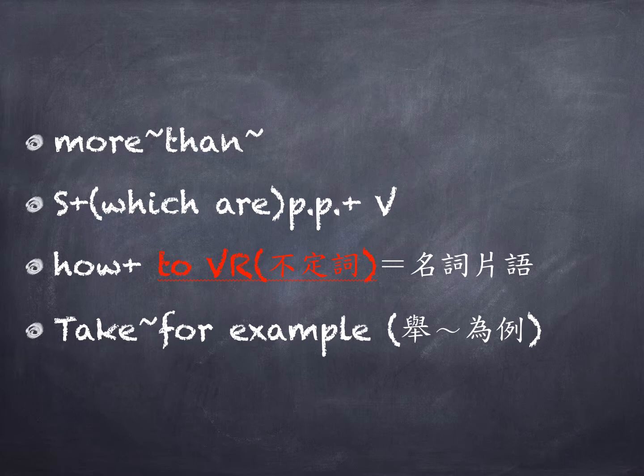Take warm water for example. Take something for example畫線,舉點點點為例。我們現在舉第一個例子喔。同學你拿起色筆,warm water寫個1。第一個例子是warm water溫水。